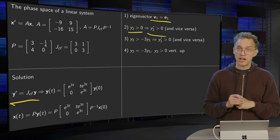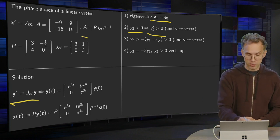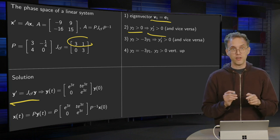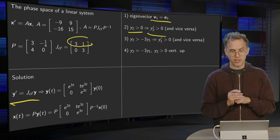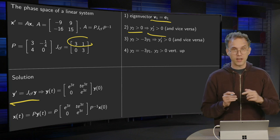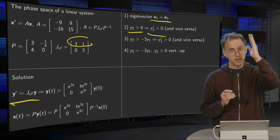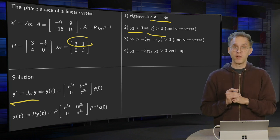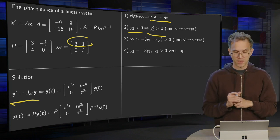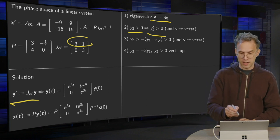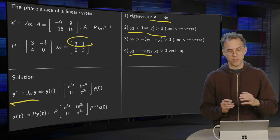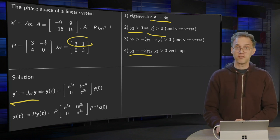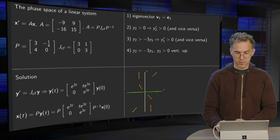Then we have Y1 prime equals 3 times Y1 plus Y2. So if Y2 is above minus 3Y1, then Y1 prime is positive. And if Y2 is below minus 3 times Y1, then Y1 prime is negative. Finally, if we are on the line and Y2 is positive, then we go up. So with this information, we can draw the phase space.